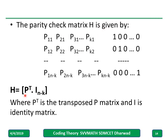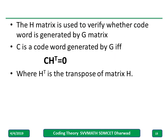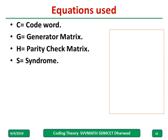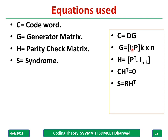The parity check matrix H is given by P^T followed by an identity matrix, where P^T is the transpose of the parity matrix. H is used to verify whether a code word was generated by a particular generator matrix G. The verification condition is: c · H^T = 0. If the code word times H transpose gives zero, then the code was generated by G — if and only if. The key equations are: c = d·G, G = [I | P], H = [P^T | I], c·H^T = 0, and S = r·H^T for decoding.